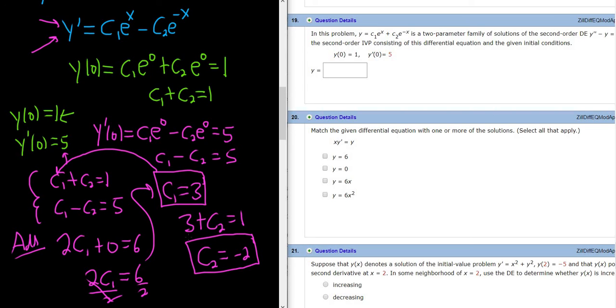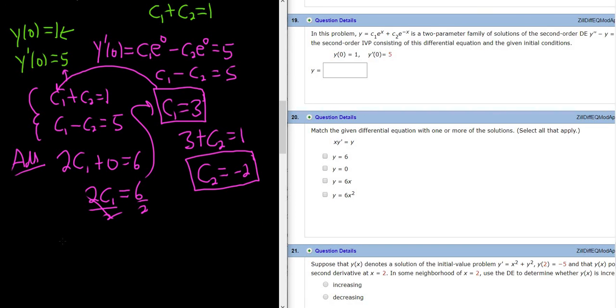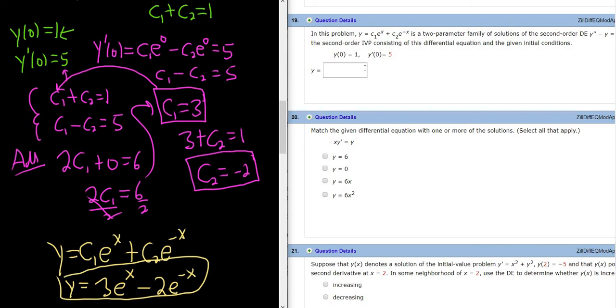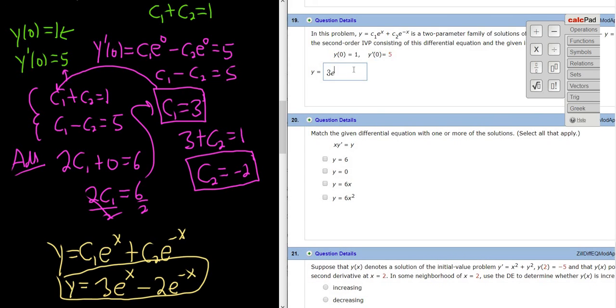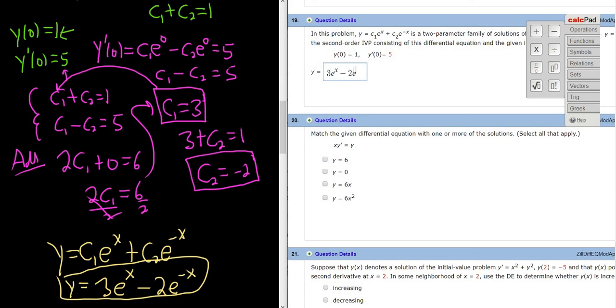So now that you have your c's, all you have to do is plug them back into your original value of y. So y was given in the problem. It was c1 e to the x plus c2 e to the negative x. So now we simply replace the constants with the numbers. So this is 3 e to the x minus 2 e to the negative x because c1 was 3 and c2 was negative 2. So then you would just go in here and type it in. And that's it.